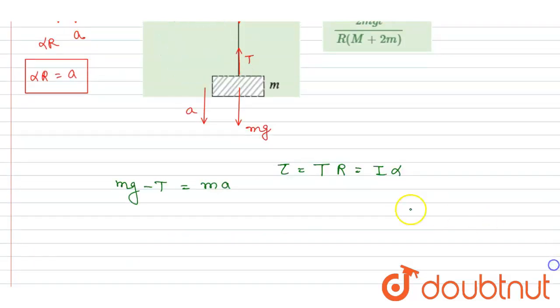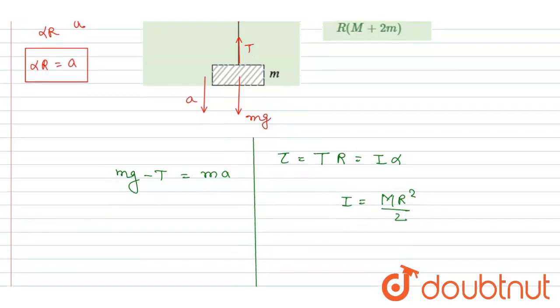And this is a cylinder, right? So we know that in case of cylinder, the I equals MR squared by 2. Right? So you can put the value of I here.